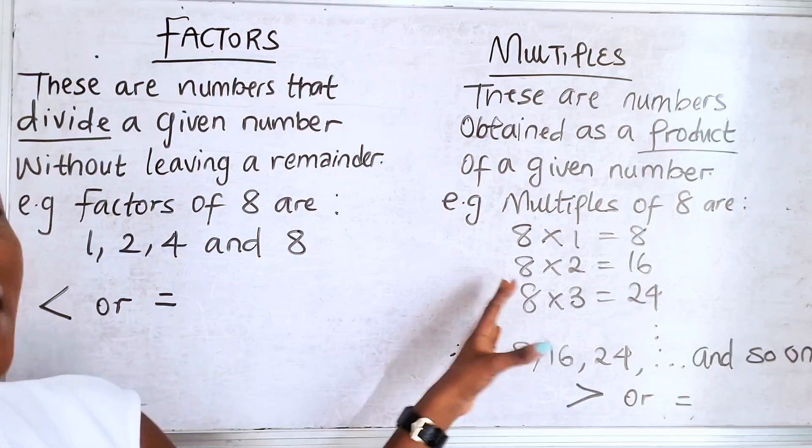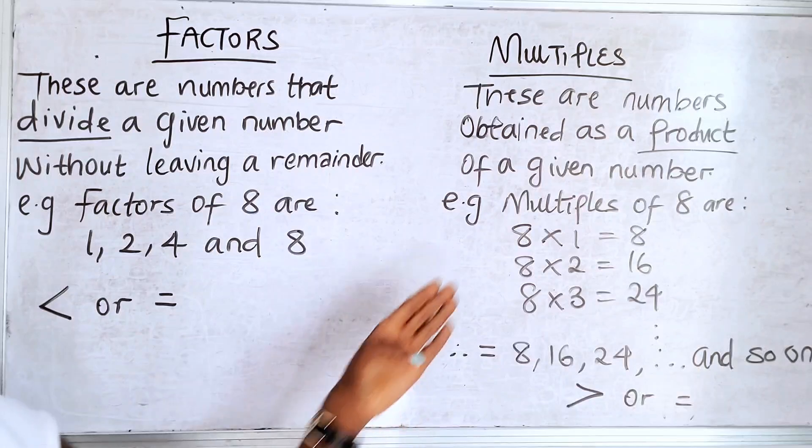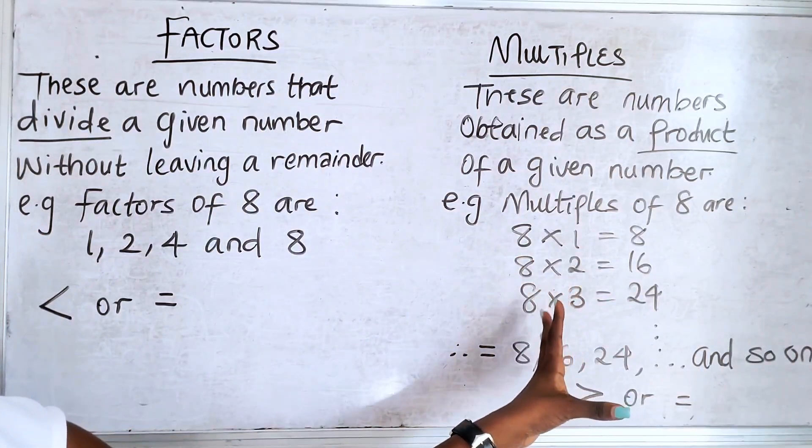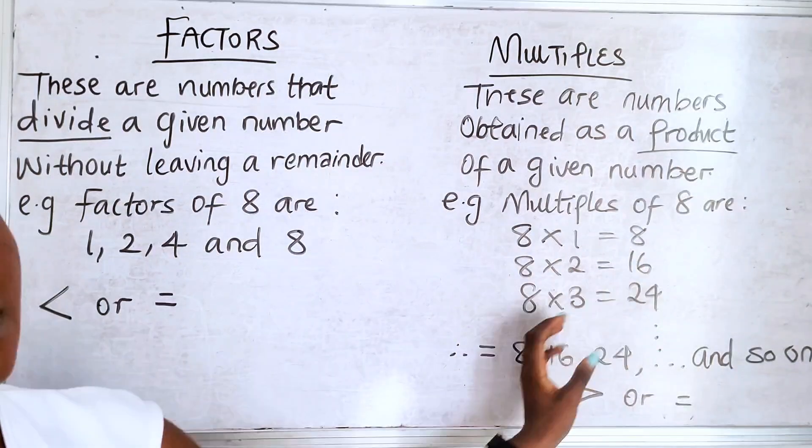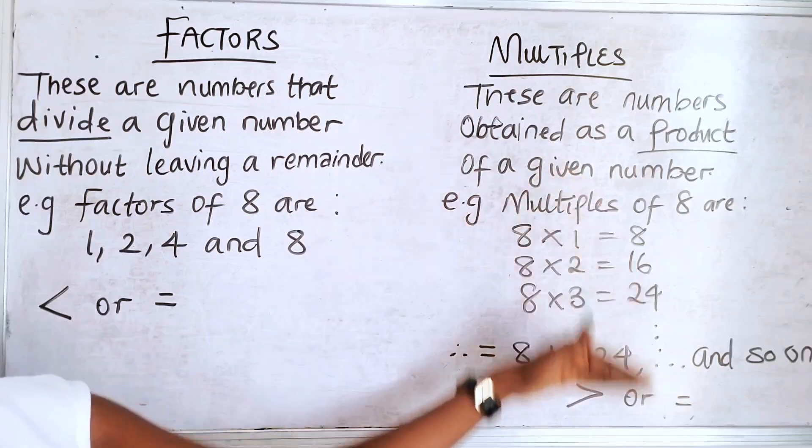But when you're asked to find the multiples of 8, we're saying that you have to know how to multiply 8 by any number, any integer. So 8 times 1 is 8. 8 times 2 is 16. 8 times 3 is 24. Just your multiplication table. It keeps going like that.